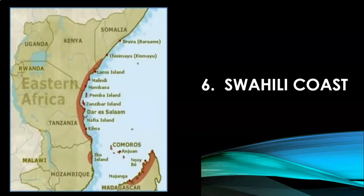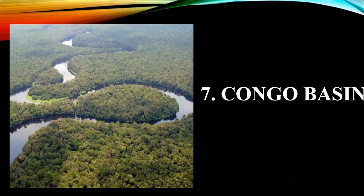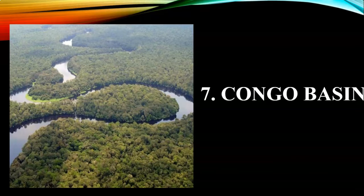The Congo Basin. The Congo Basin lies on both sides of the equator in west-central Africa. It comprises an area of more than 3.4 million square kilometers and is covered with dense evergreen forests. It provides food, shelter, medicine, water and materials for over 7.5 million people. It is the world's second largest river basin, next to the Amazon.